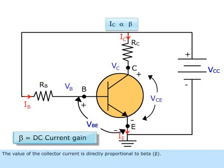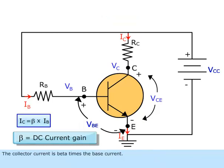The value of the collector current is directly proportional to beta. The collector current is beta times the base current.